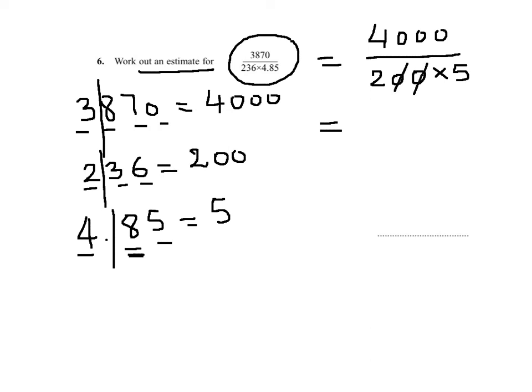Simplifying here, I'll get 40 over 2 times 5, which is 10. So my answer is 4. Thank you.